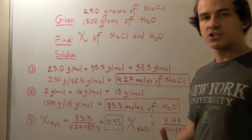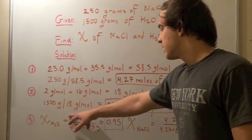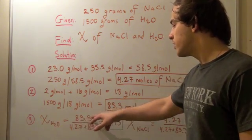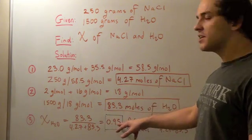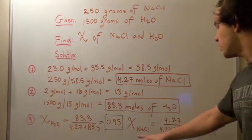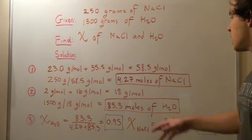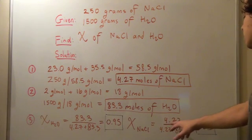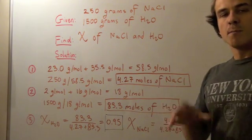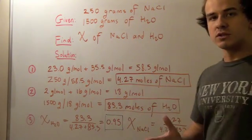Finally, to find the mole fraction, we use the formula. The mole fraction of H₂O is the number of moles of H₂O divided by the total number of moles: 83.3 divided by the total, which is approximately 0.95. To find the mole fraction of sodium chloride, we follow the same procedure, but put the moles of NaCl on top: 4.27 divided by the total number of moles gives us 0.05. Because mole fraction is a fraction — we divide moles by moles — the answers are unitless.